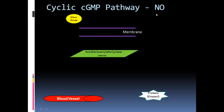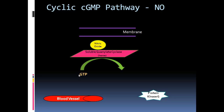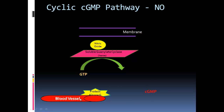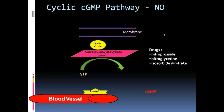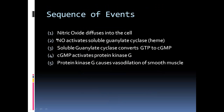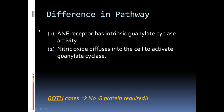The cyclic cGMP pathway also involves nitric oxide. Nitric oxide binds to soluble guanylate cyclase, GTP is expended, the metabolite cGMP is released, cGMP binds to and activates protein kinase G, which then leads to vasodilation. Drugs utilizing this pathway include nitroprusside, nitroglycerin, and isosorbide nitrate. The key difference: ANF receptor has intrinsic guanylate cyclase activity, whereas nitric oxide diffuses into the cell to activate guanylate cyclase. In both cases, no G protein is required.